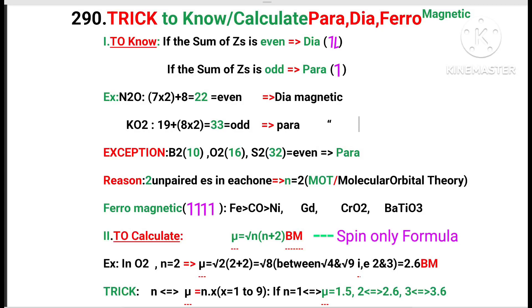Welcome to Chemistry Shortcuts 1780. Here is a video for IIT, JEE Boards. Idea number 219: Trick to know and calculate para-dia-ferromagnetism in substances.